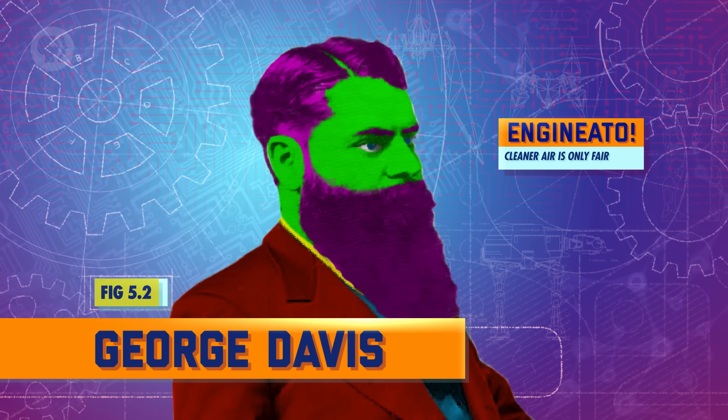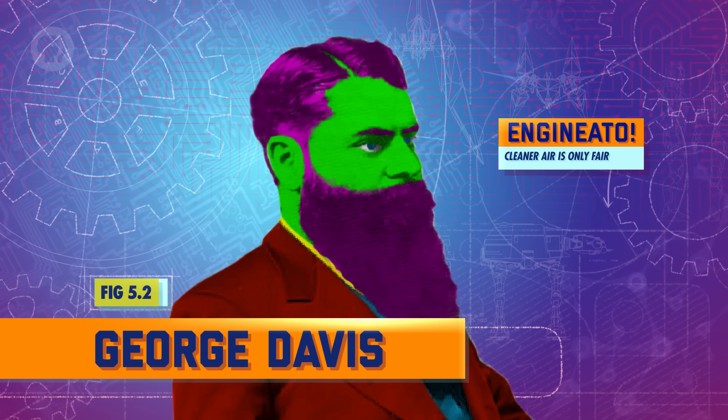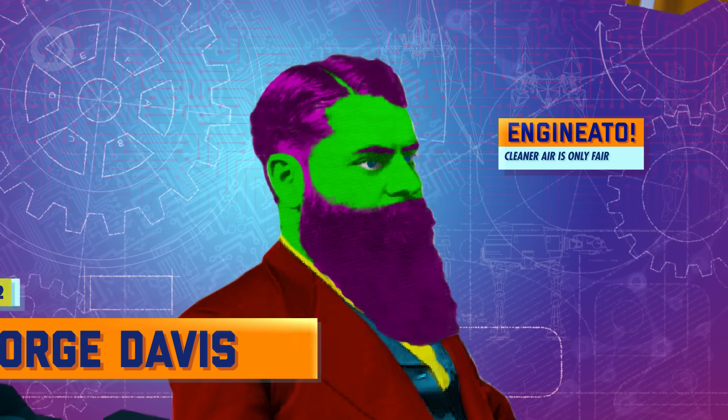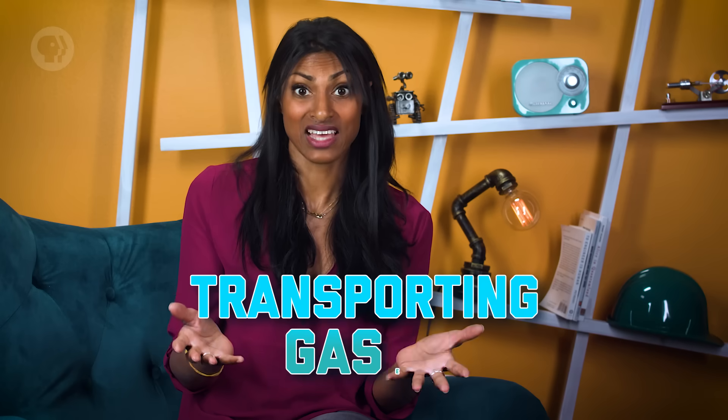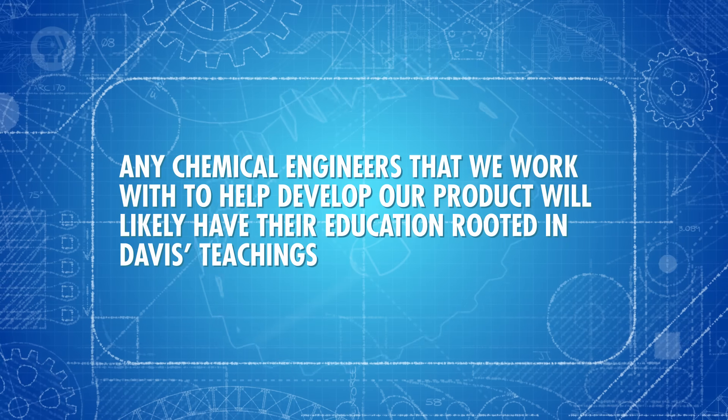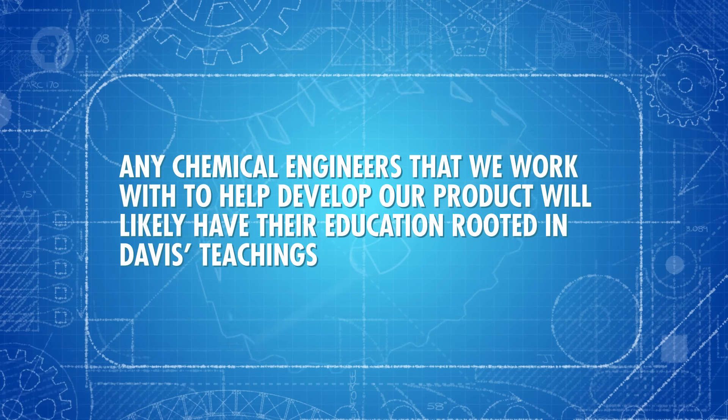In the late 19th century, British chemist George Davis worked as an inspector for the Alkali Act, which was an early piece of environmental legislation in response to the Leblanc process. The act required soda manufacturers to reduce the amount of hydrochloric acid gas they released into the atmosphere. Around 1887, Davis gave a series of lectures at the Manchester School of Technology. His talks formed the basis for his two-volume Handbook of Chemical Engineering, which was the first of its kind. What made Davis' work unique was that it organized basic operations common to many industries, like transporting liquids and gases or distillation. In the US, his work helped stimulate new ways of thinking about chemical processes and sparked the creation of chemical engineering degrees at universities around the country.